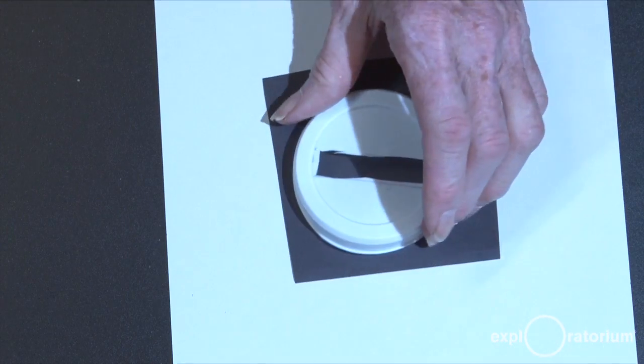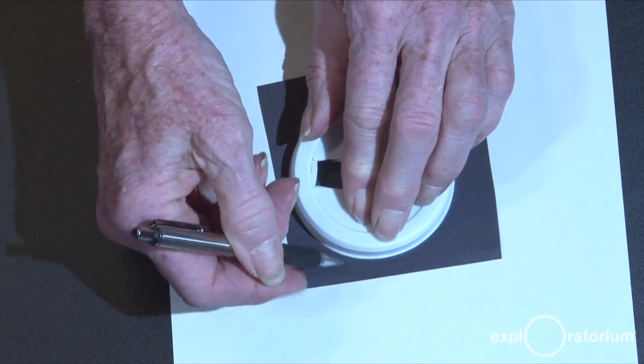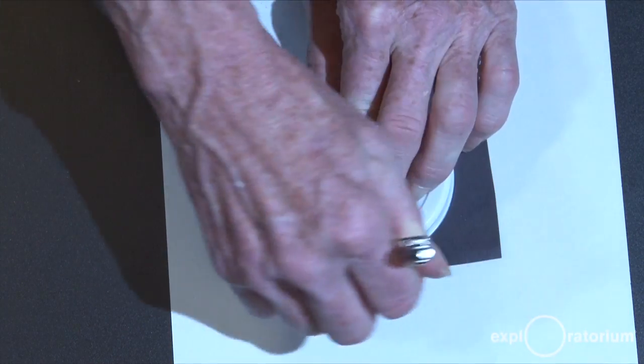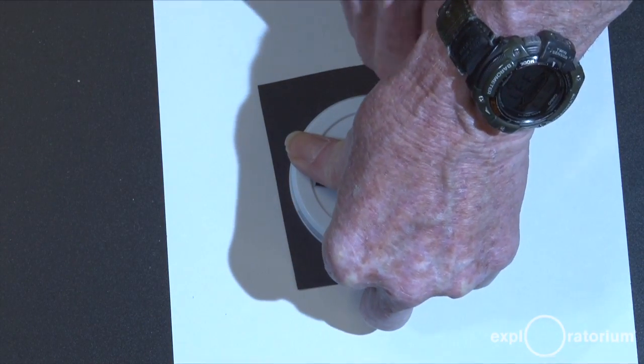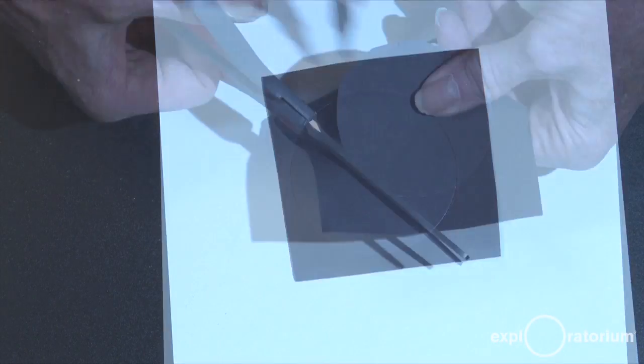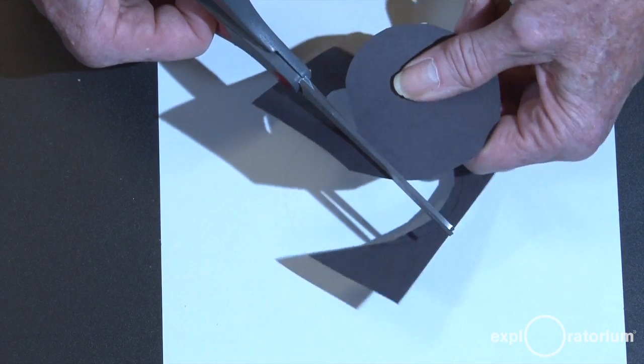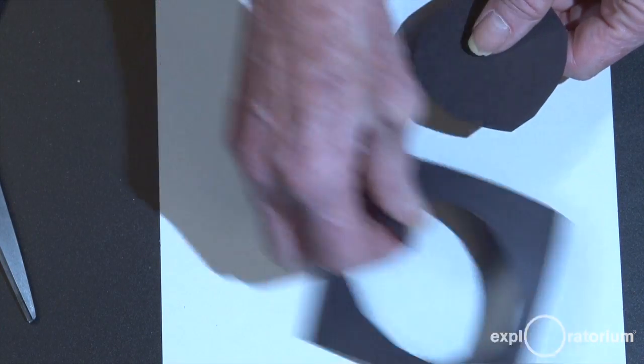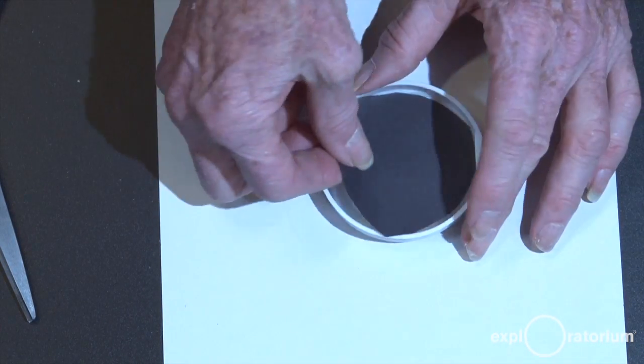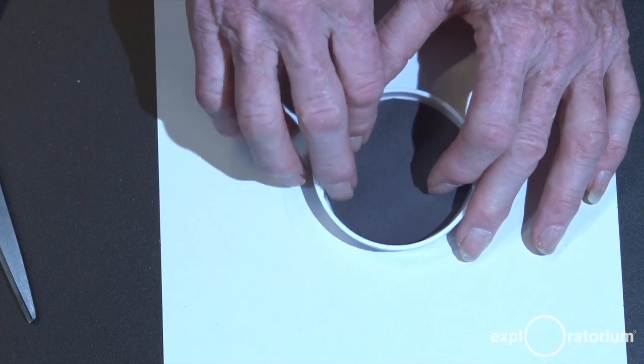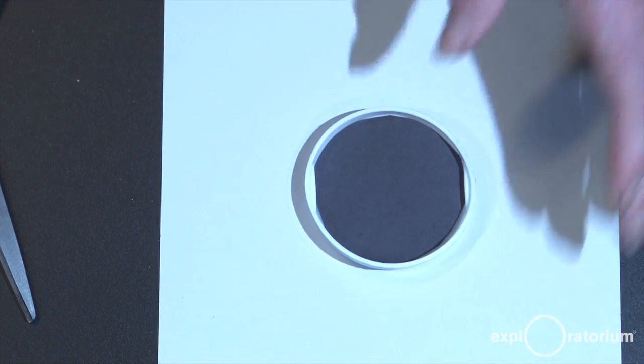The next thing is we're going to cut out a circular disc of black construction paper. First I'll trace it with my pen. That gets me the outside outline. Then I'll use the scissors, but I'll cut inside that line a little bit. And now I have my disk of paper that will slide nicely inside my end cap.